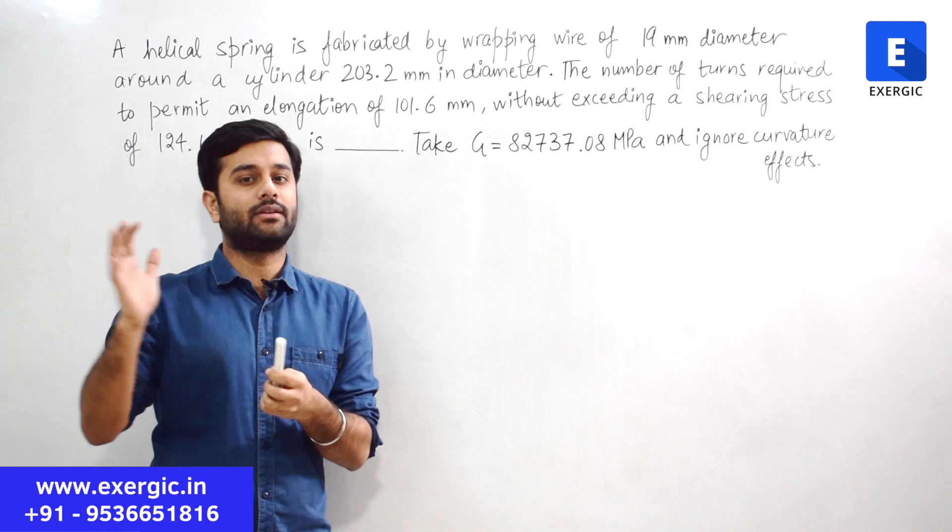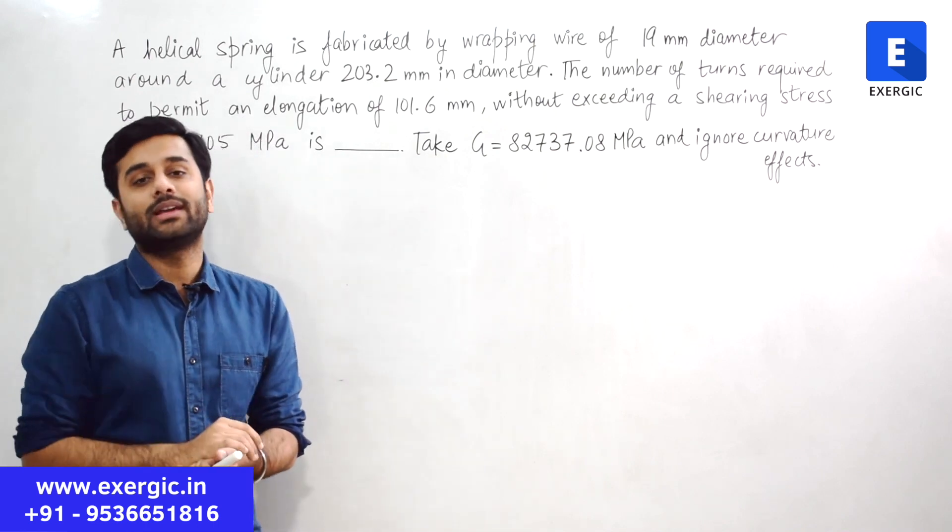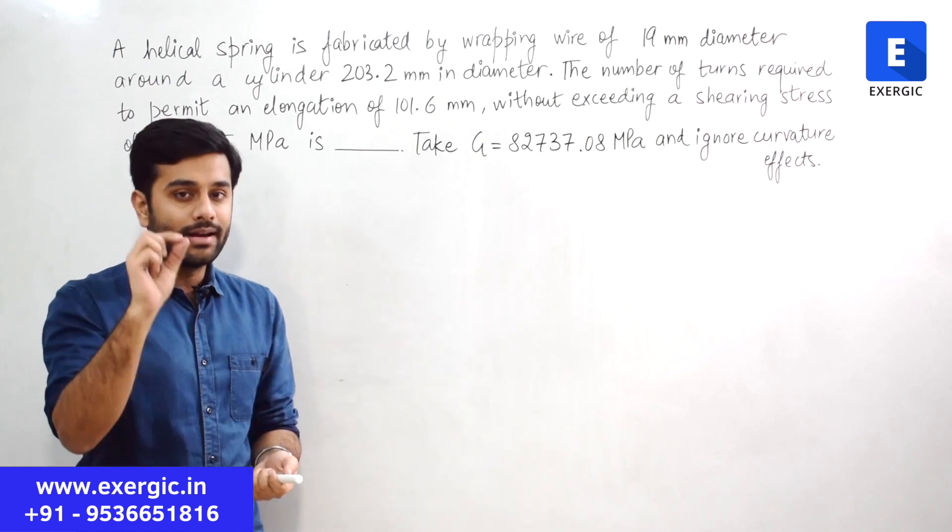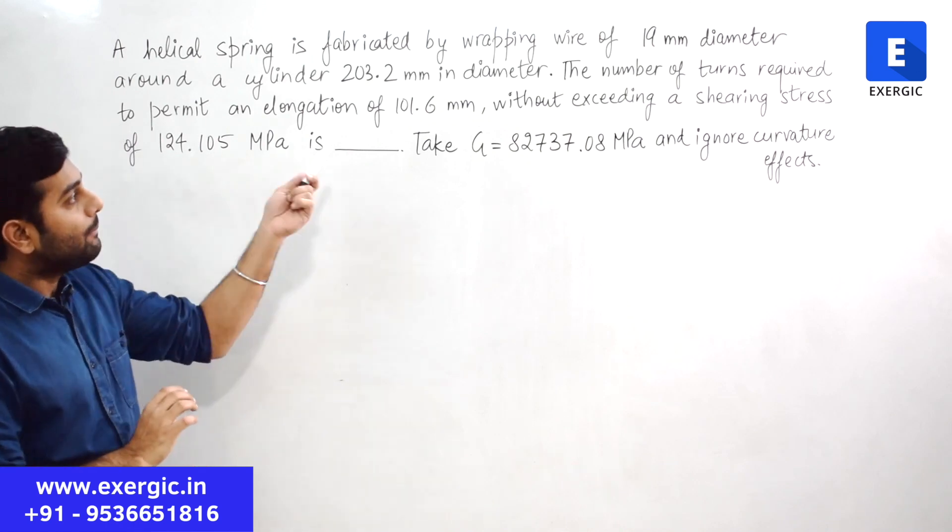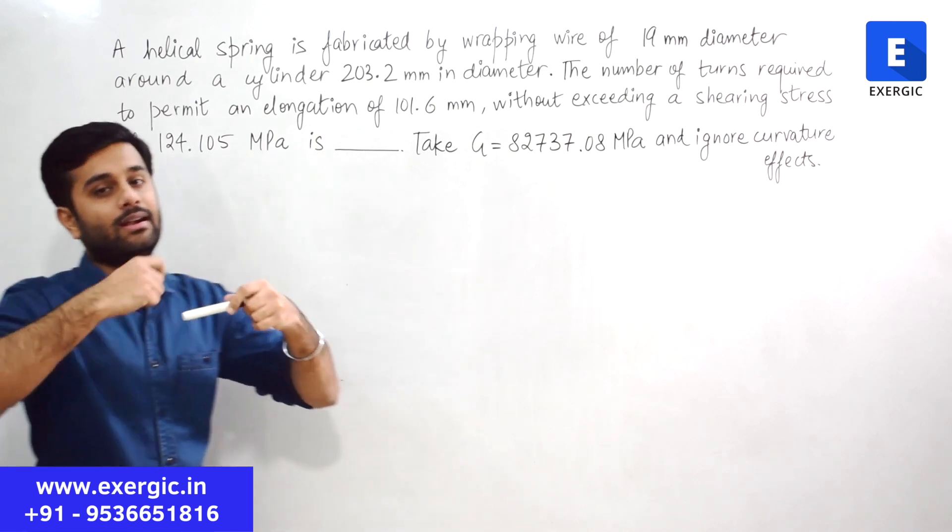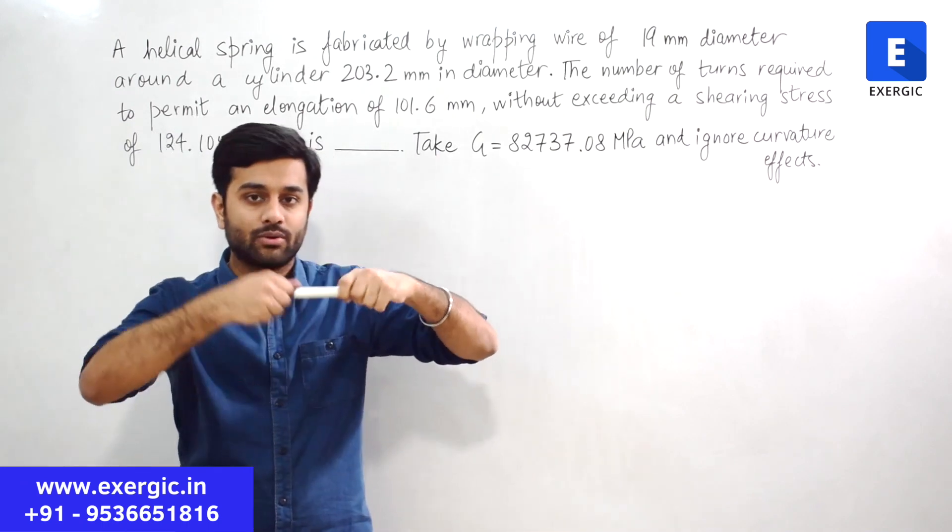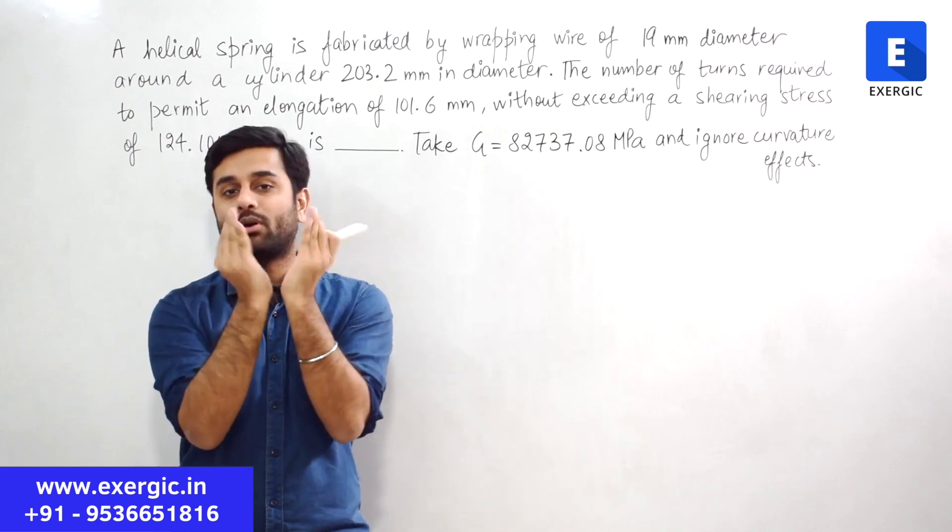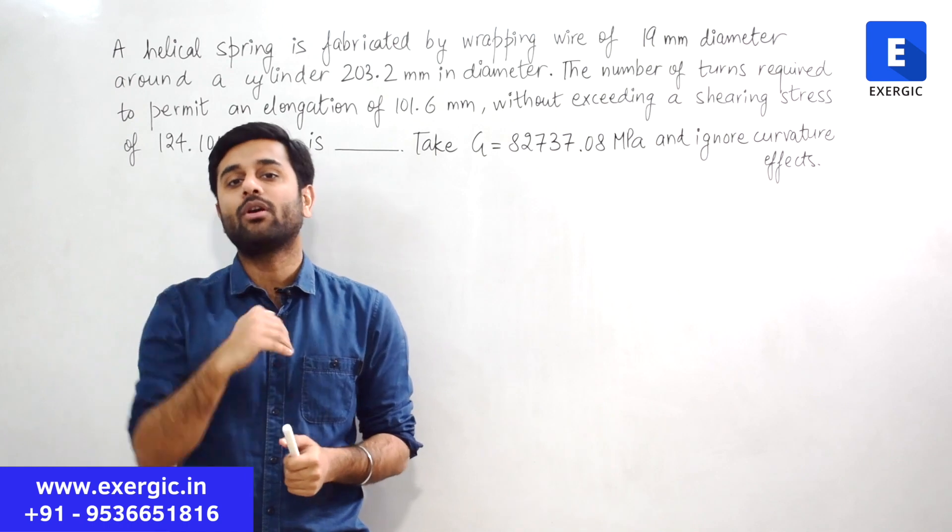We have discussed about all the different ways that how in industries it can be made - hot working can be done, cold working can be done. But in this question it is talking about a specific way to make it by wrapping the wire around a cylinder. That is also something that we know that if you wrap the wire around a cylinder it is going to take a shape.